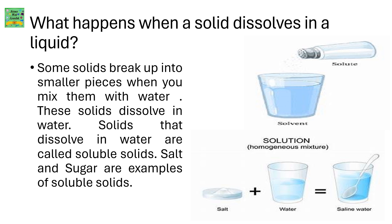What happens when a solid dissolves in a liquid? Some solids break up into smaller pieces when you mix them with water. These solids dissolve in water. Solids that dissolve in water are called soluble solids. Salt and sugar are examples of soluble solids.